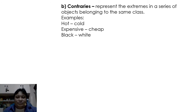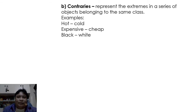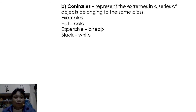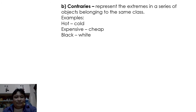Contraries represent the extremes in a series of objects belonging to the same class. Unlike contradictories that use a prefix or suffix for simple negation, contraries express the extremes. For example: hot and cold, expensive and cheap, black and white, yin and yang. These are contraries.